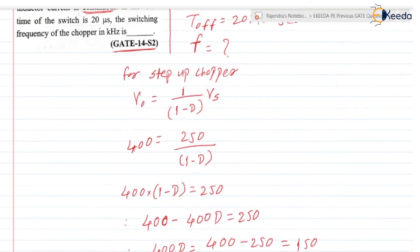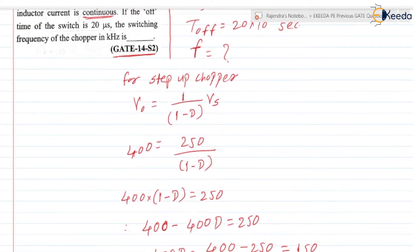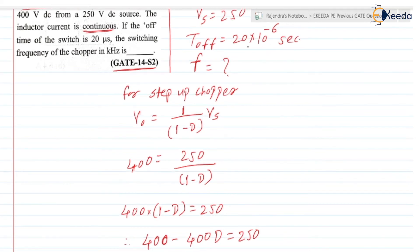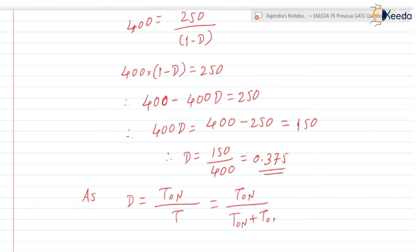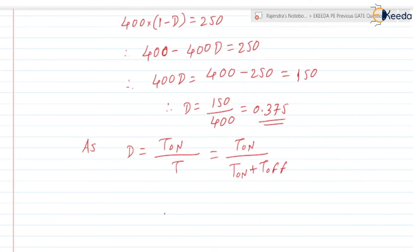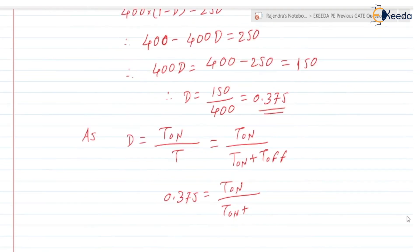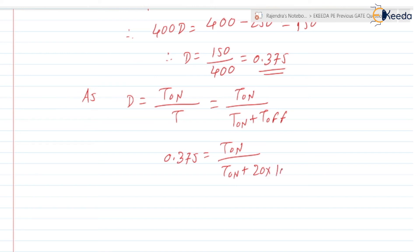Next our task is to find F. For that we need to find the total time period T. The duty cycle is defined as D = Ton / (Ton + Toff). So we have 0.375 = Ton / (Ton + 20 × 10⁻⁶), where Toff is 20 × 10⁻⁶ seconds.